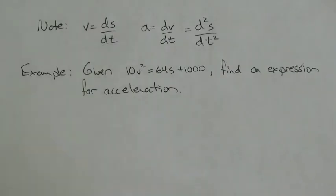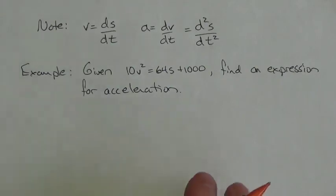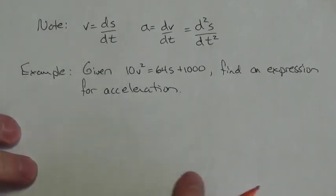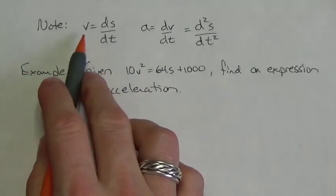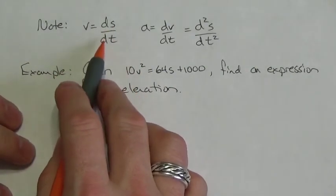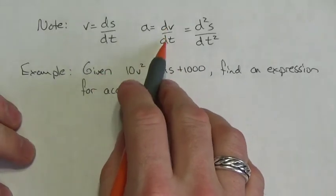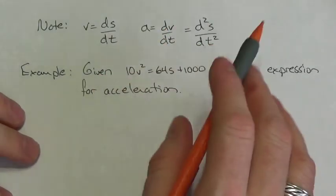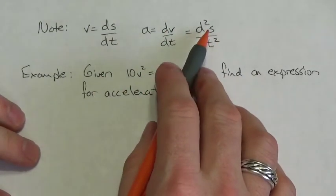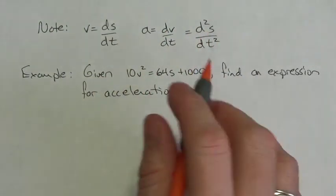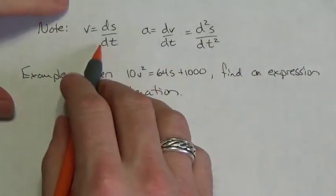So now we're going to take a look at acceleration and velocity questions, this time with a little twist on it. Remember that velocity is the derivative of displacement, and acceleration is the derivative of velocity, which means it's the second derivative of displacement with respect to time.